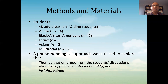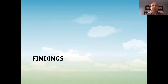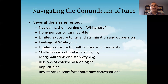There were 43 adult learners. The majority of students were white, and there were some African Americans, Latinx, Asians, and multiracial students. A phenomenological approach was utilized to explore the themes that emerged from students' discussions about race, privilege, and intersectionality, and what kinds of insights they gained about those topics while students reflected on their own cultural identity through self-exploration.